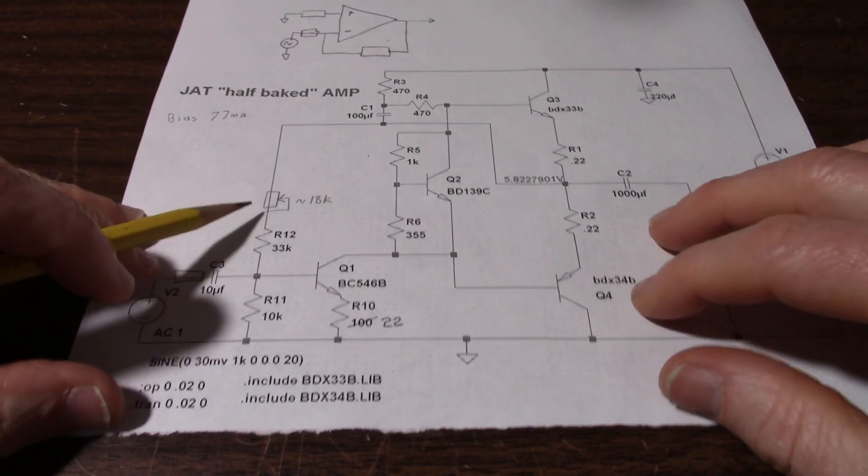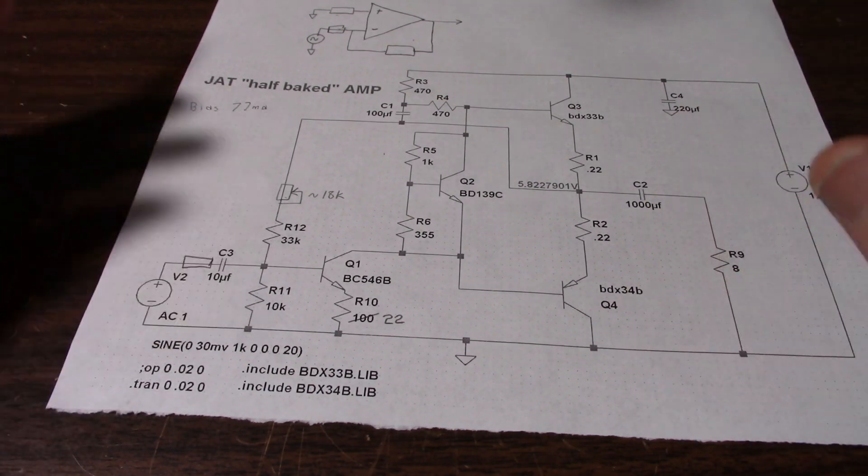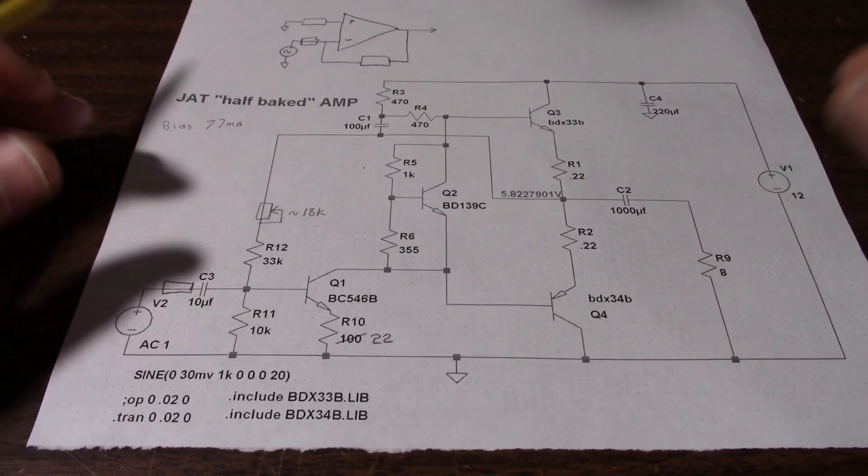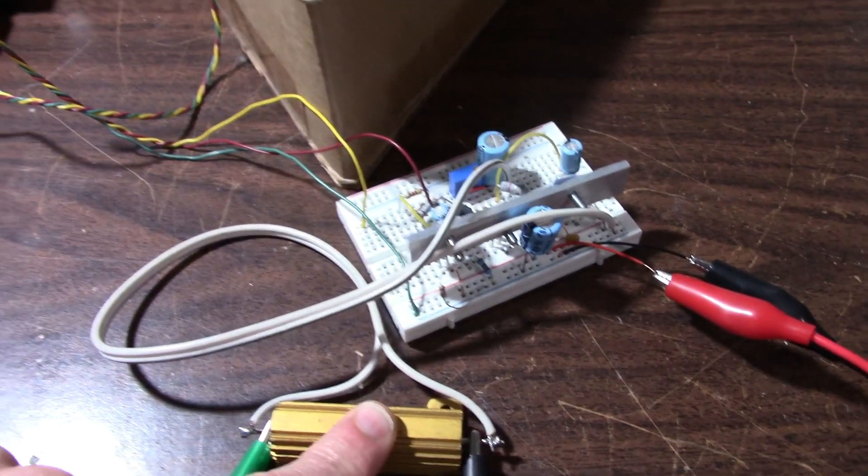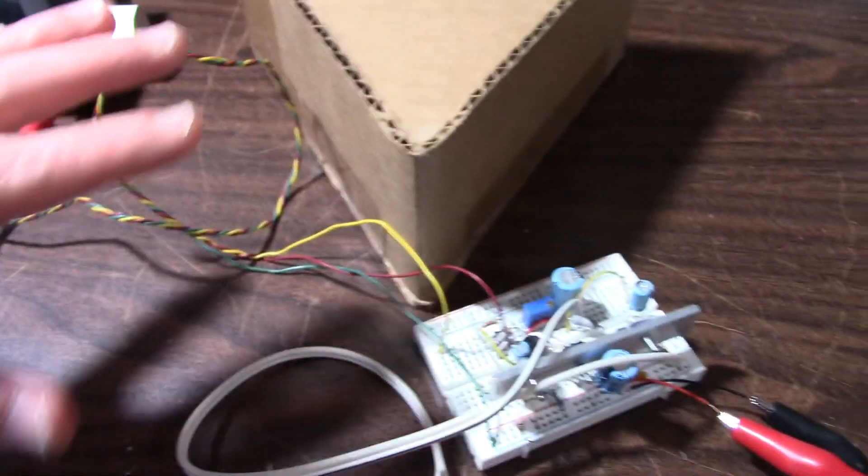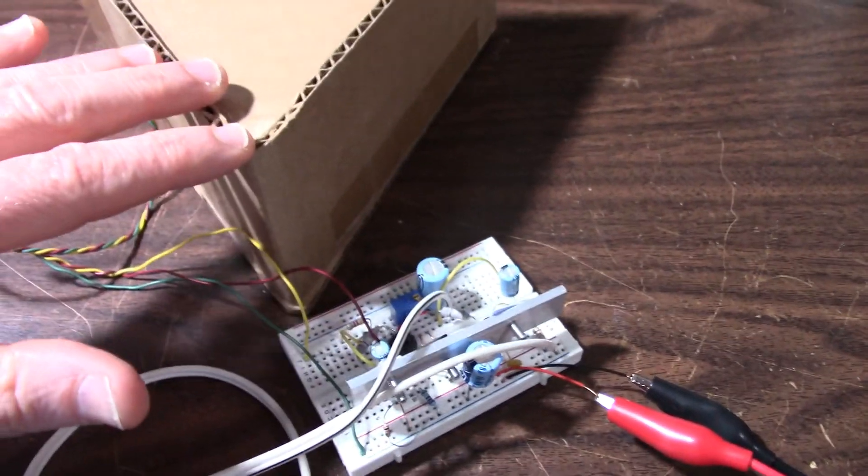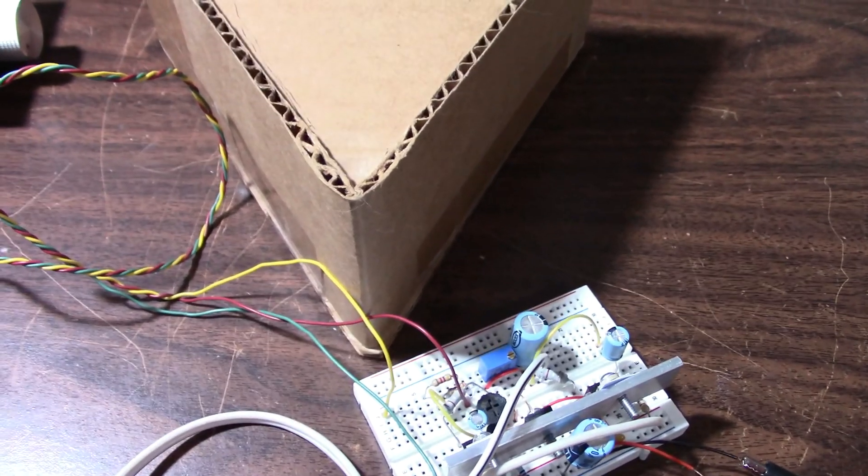But first, let's look at the amplifier again on the scope without that resistance so we can have something to compare in this video. I got the amplifier hooked up, 8 ohm load on the output, signal source, little preamp, and power supply turned on. So let me get you pointed to the scope and we'll look at the signals.